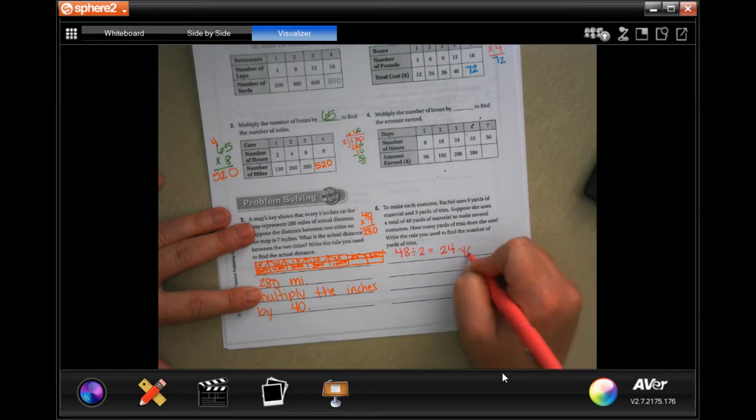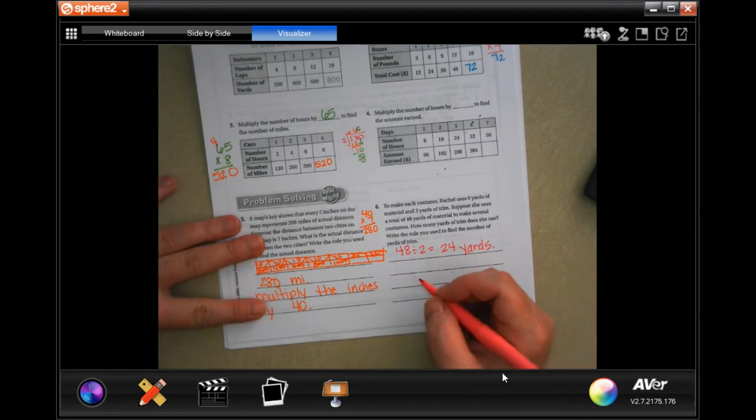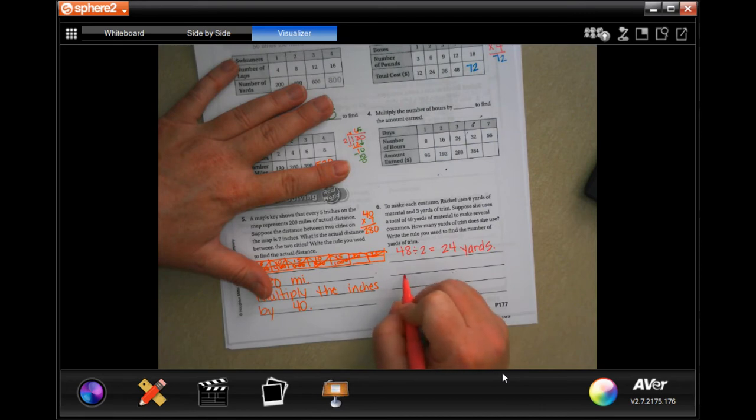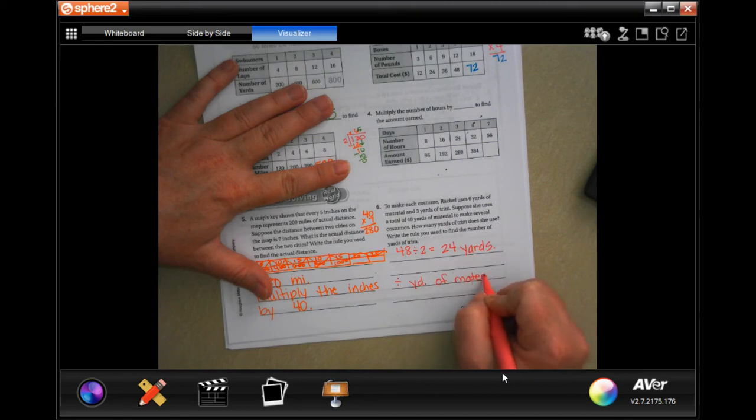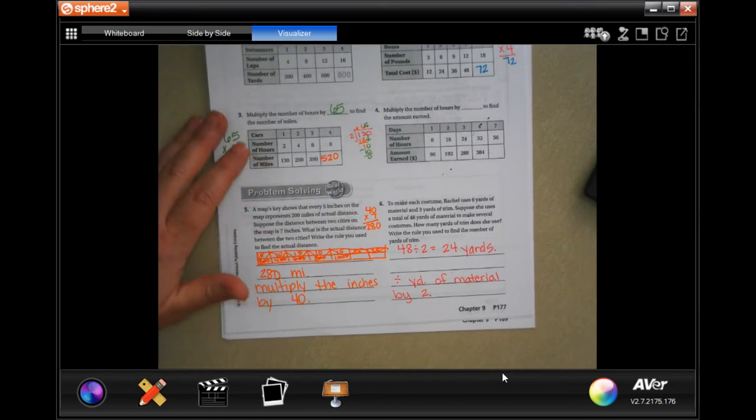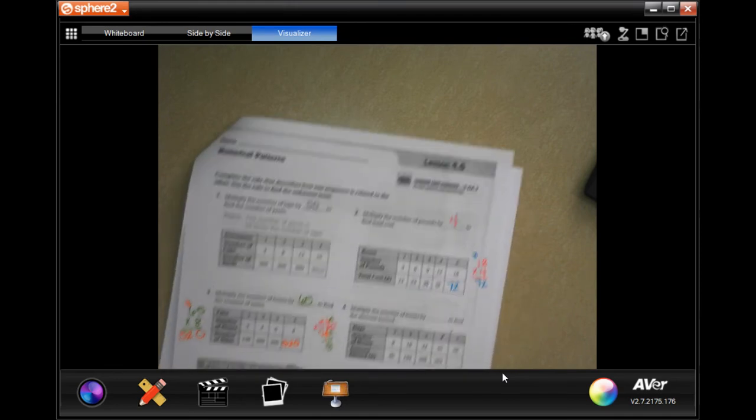24 yards of trim. And our rule was to divide yards of material by two. Don't forget to do number four, y'all.